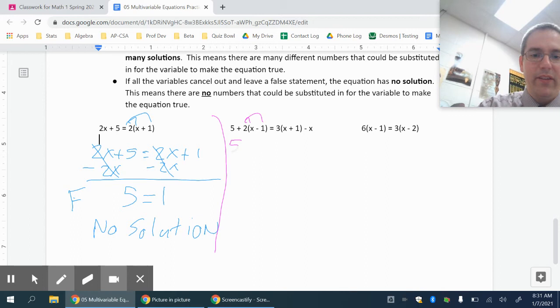On this next one, we'll go ahead and try it. We can multiply the 2 through. To simplify this side, 5 plus 2x minus 2. On the other side, I can multiply the 3 through. So that gives me 3x plus 3 minus x.